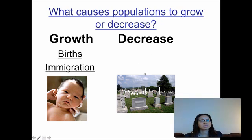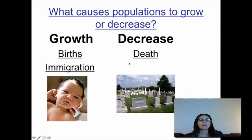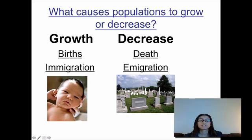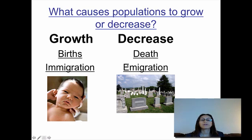Populations can also decrease. There are two main causes. One is death — when organisms die, the population becomes smaller. The second is emigration, with an E. Emigration is when organisms from a population leave and go to a different population. For example, if someone living in the United States decides to leave and move to France, they would be emigrating from the United States. One way to remember: E is for 'exit.' Individuals are exiting or leaving the population, which causes the number of individuals to go down.